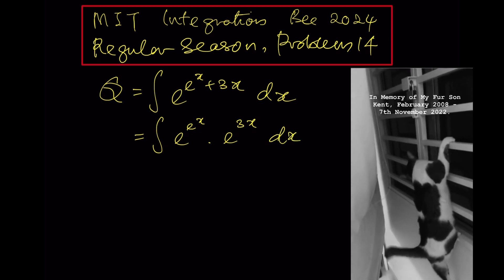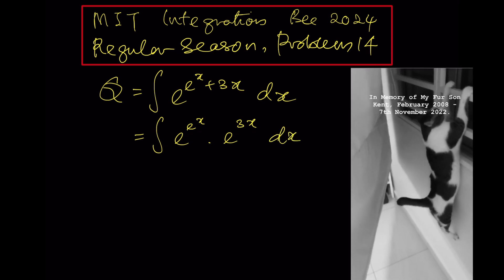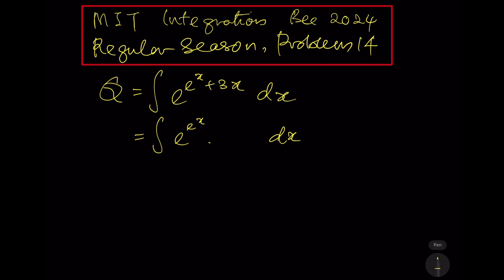Again, we rewrite e^(3x) to become (e^x)^3. Then we define t equals e^x, therefore dt equals e^x dx.